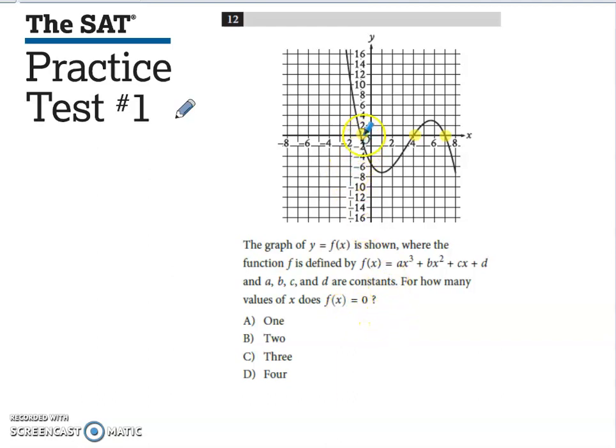The function value is equal to zero when the y value is equal to zero, or when we are crossing the x-axis.